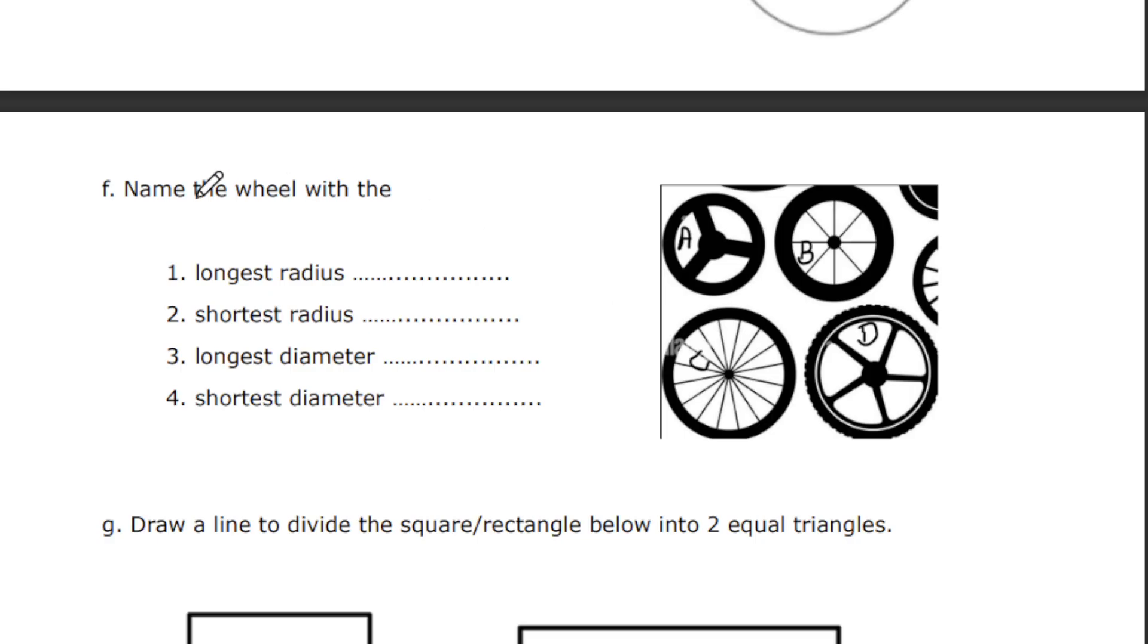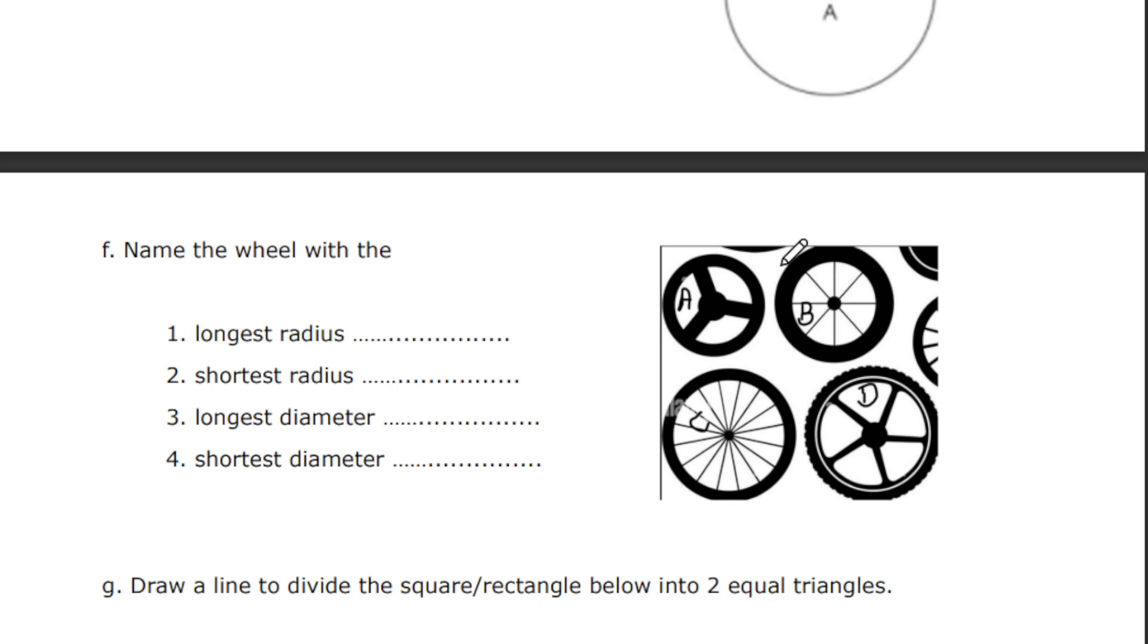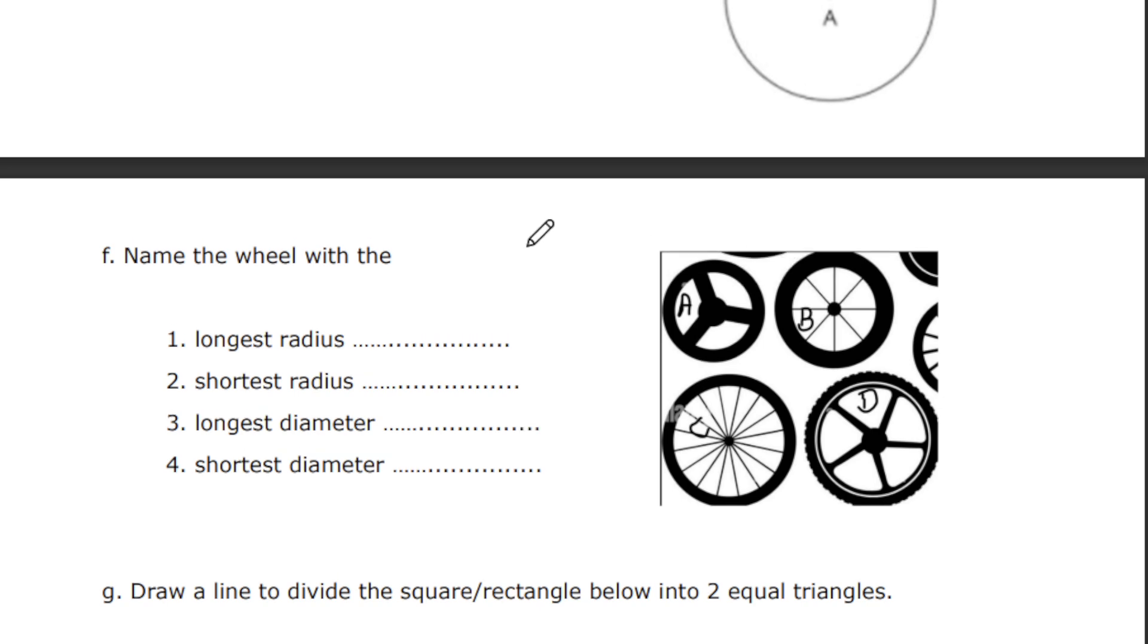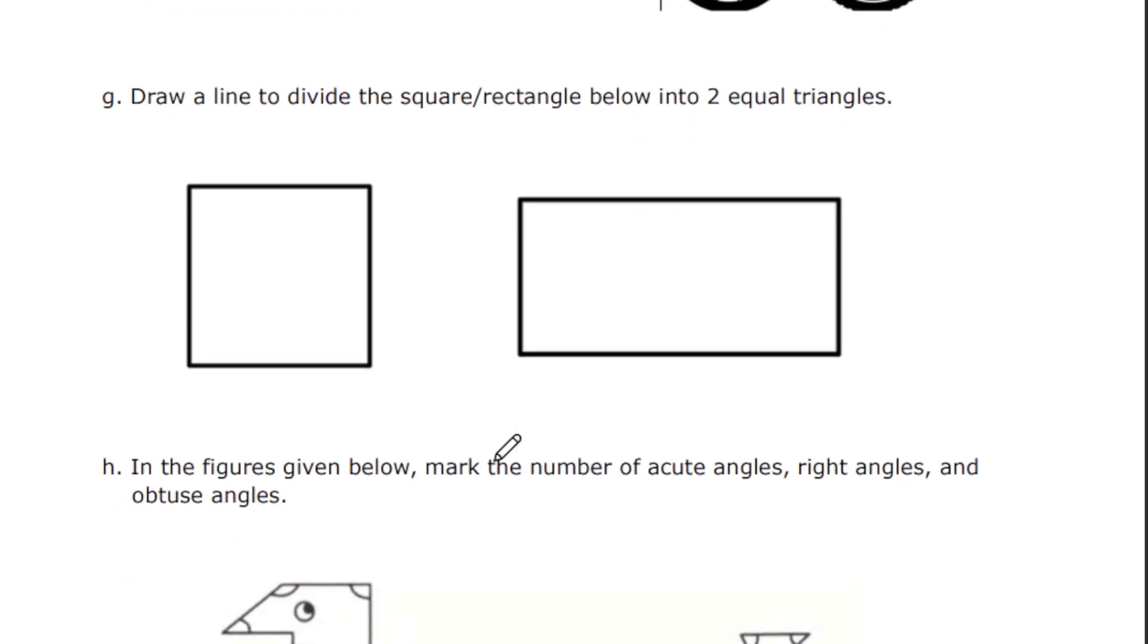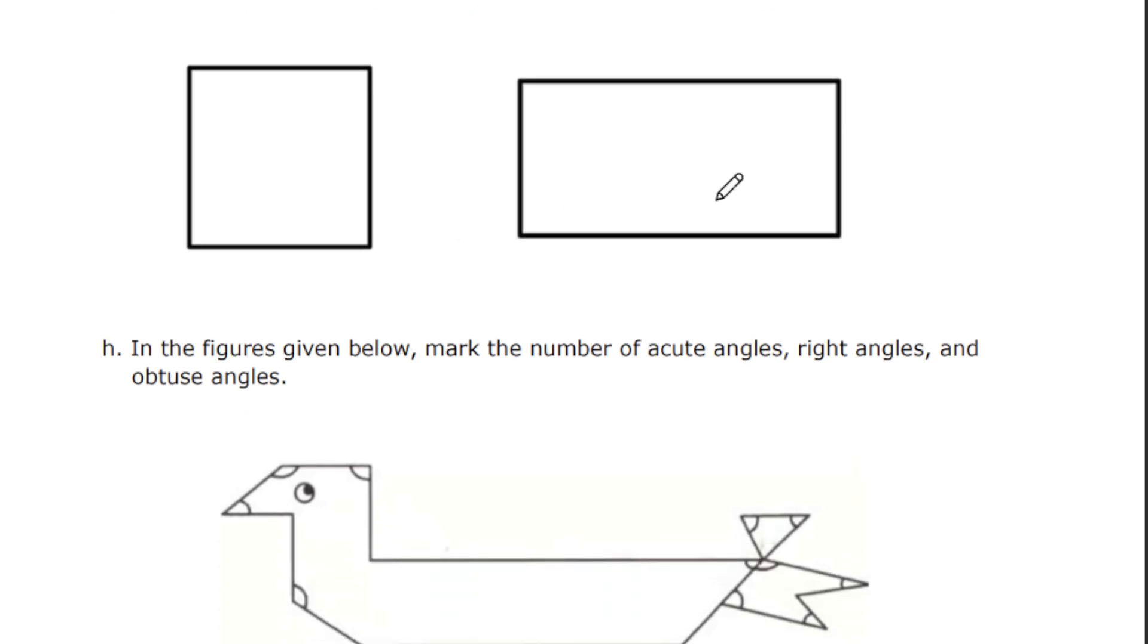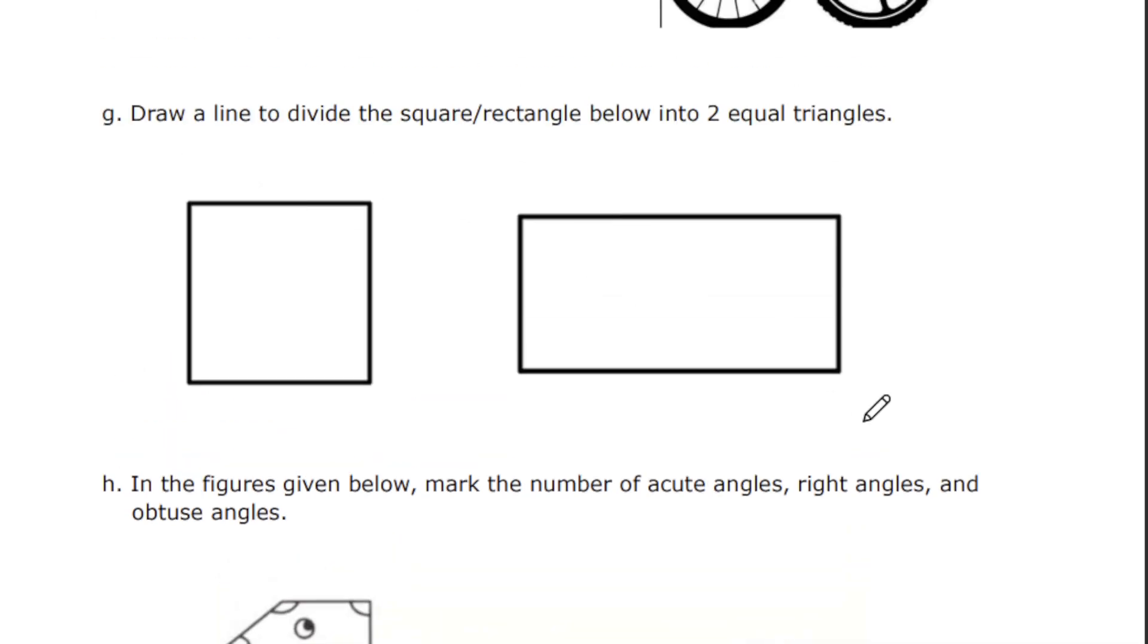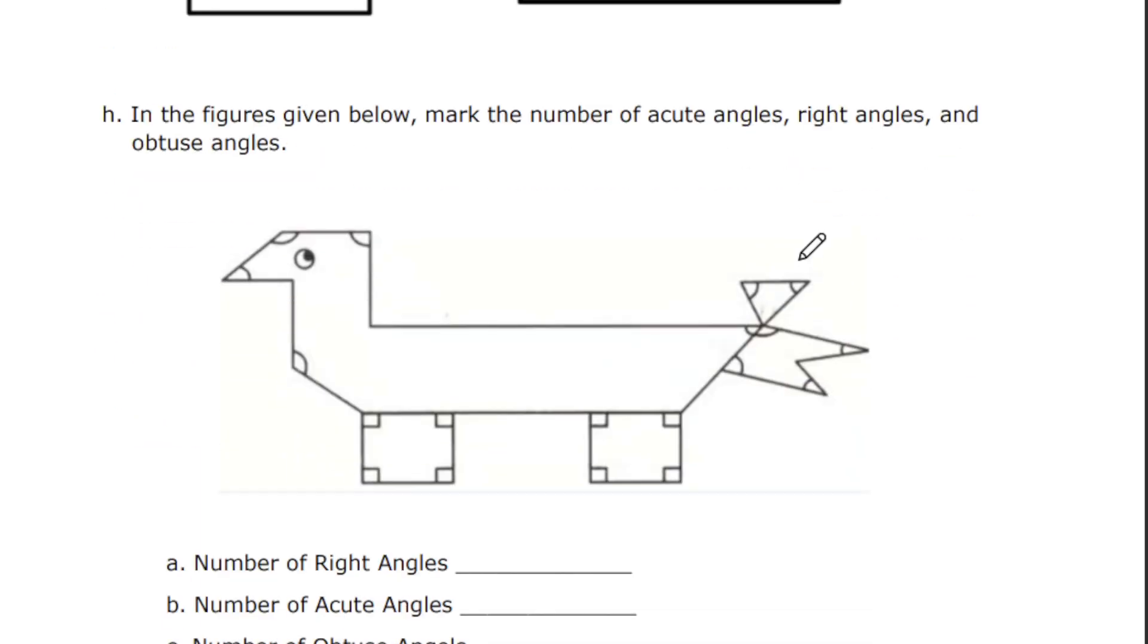Next, we have name the wheel with longest radius, shortest radius, longest diameter and shortest diameter. We already know how to find radius and diameter. You can measure and write the answer. Next, draw a line to divide the square and rectangle below into two equal triangles. You have to do it. The triangle should be equal.